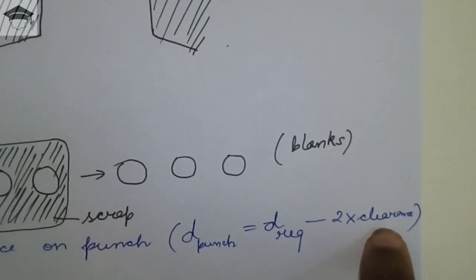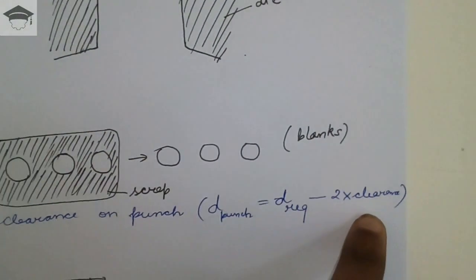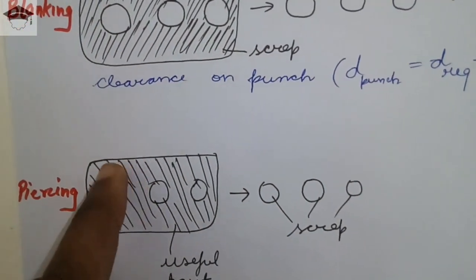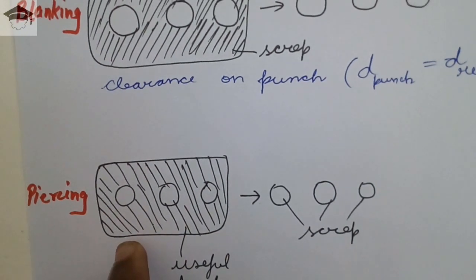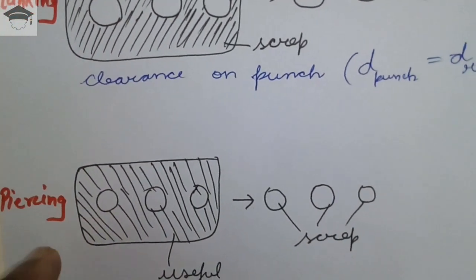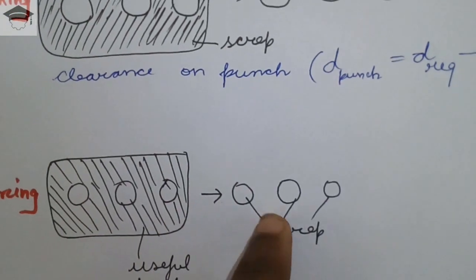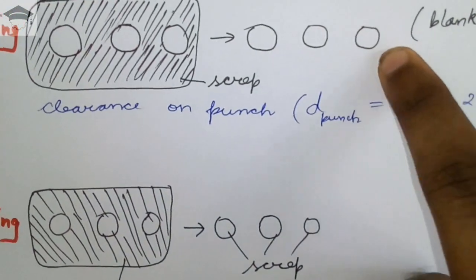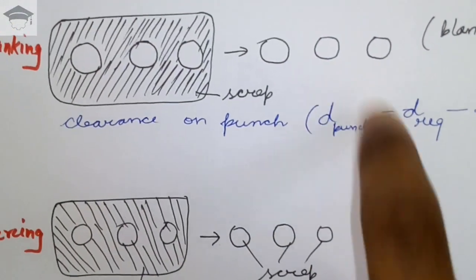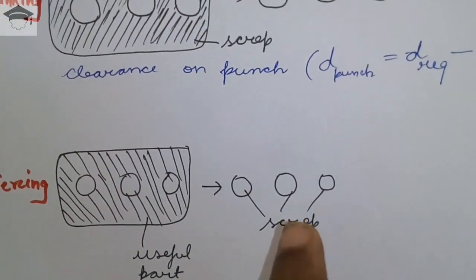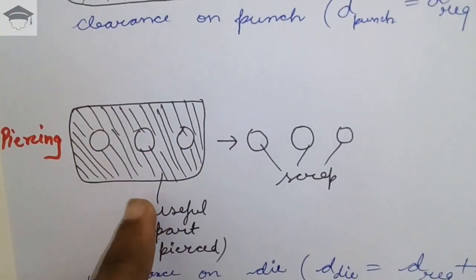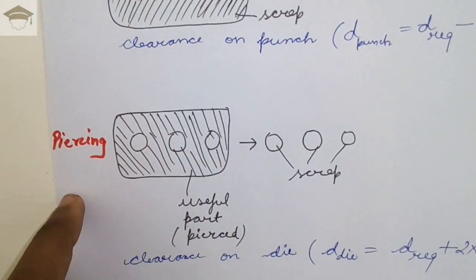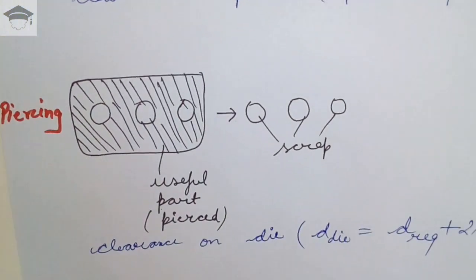In piercing operation, suppose this was the original workpiece, original sheet metal. After piercing operation, these three holes are made and they are now scrap. These three holes that were useful product in blanking, in piercing are scrap, and the remaining sheet is the useful part, the useful workpiece that is obtained after piercing operation.